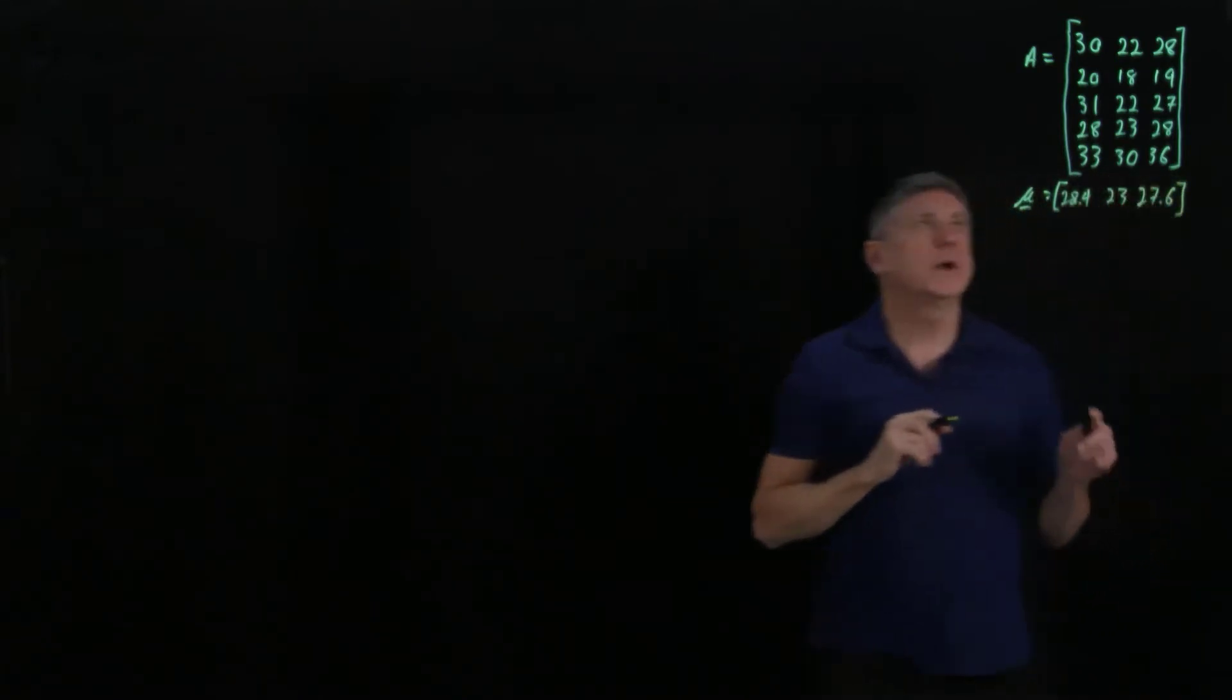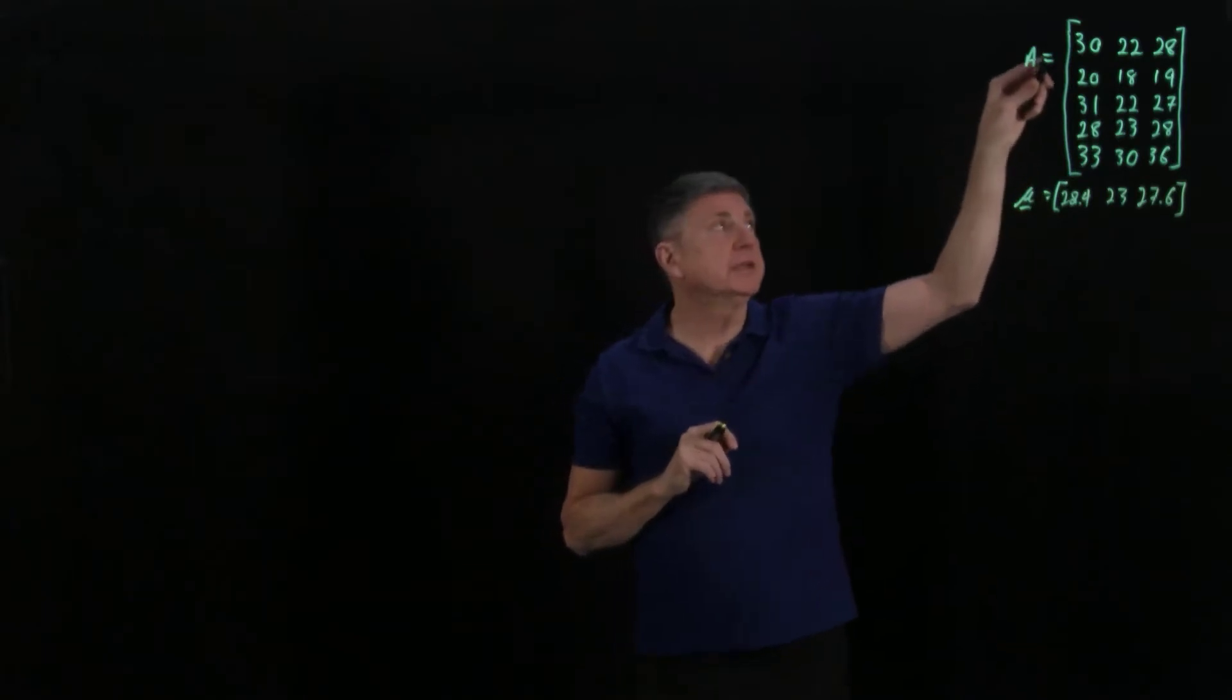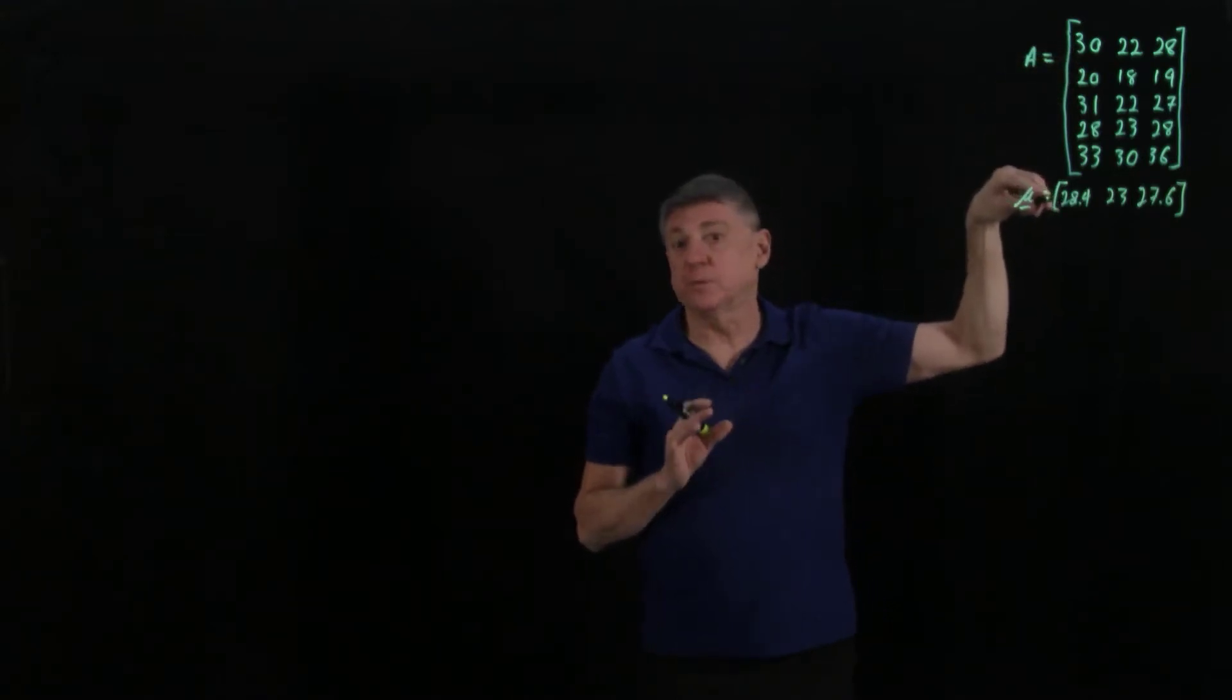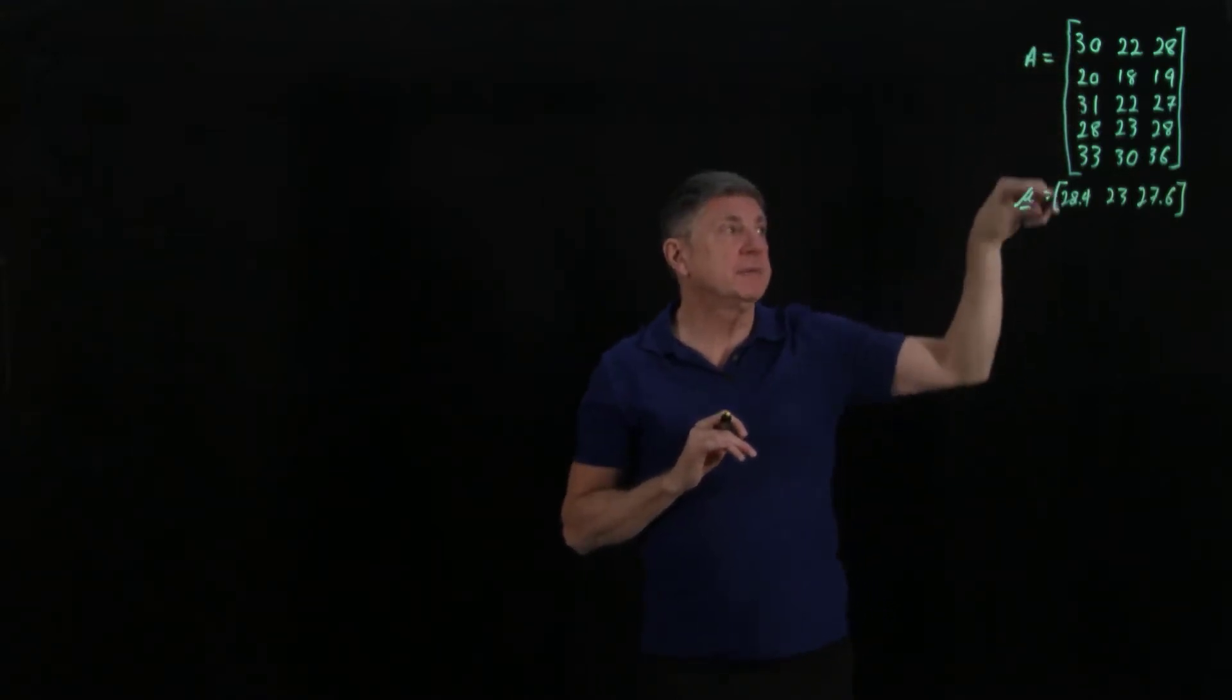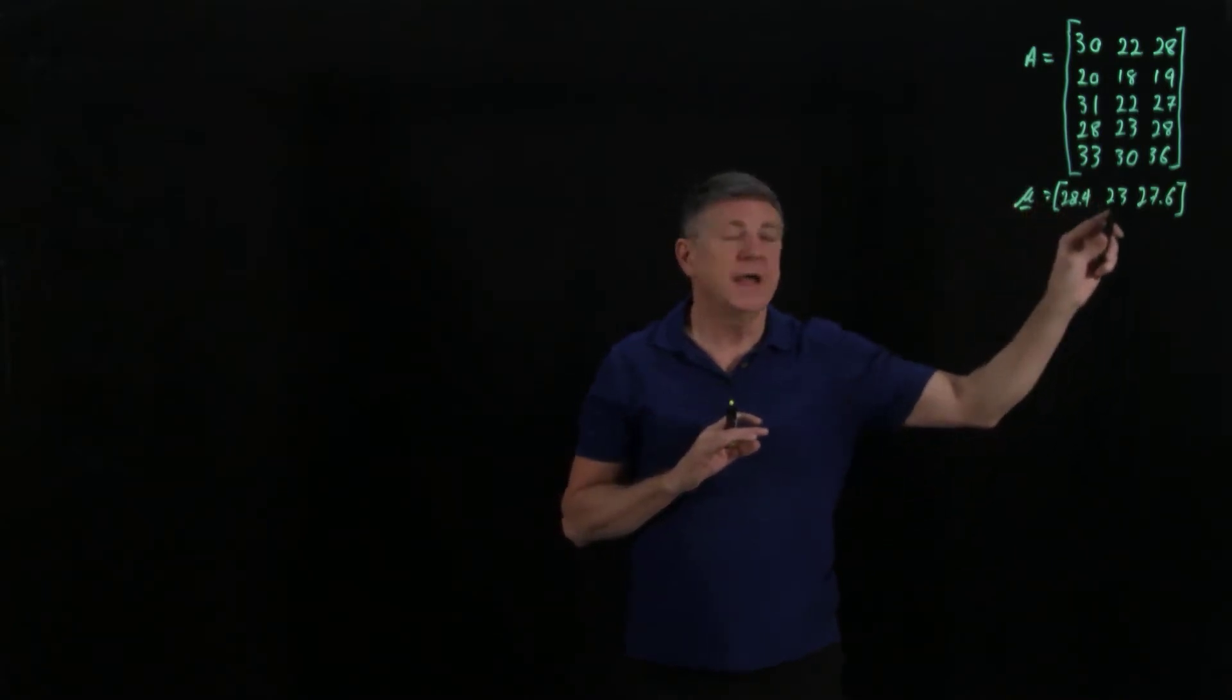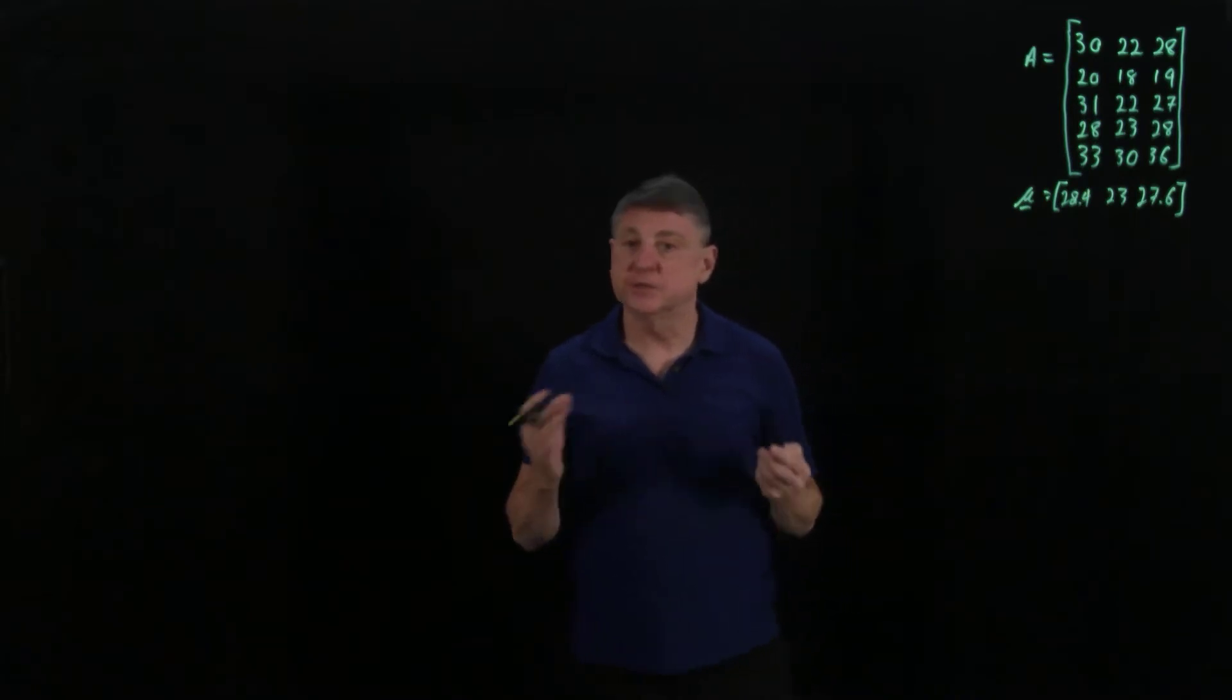When I know the means, I can simply subtract them. So 30 minus 28.4 is 1.6, 20 minus 28.4 is minus 8.4, and so on. I can then calculate the matrix that is the zero mean matrix.